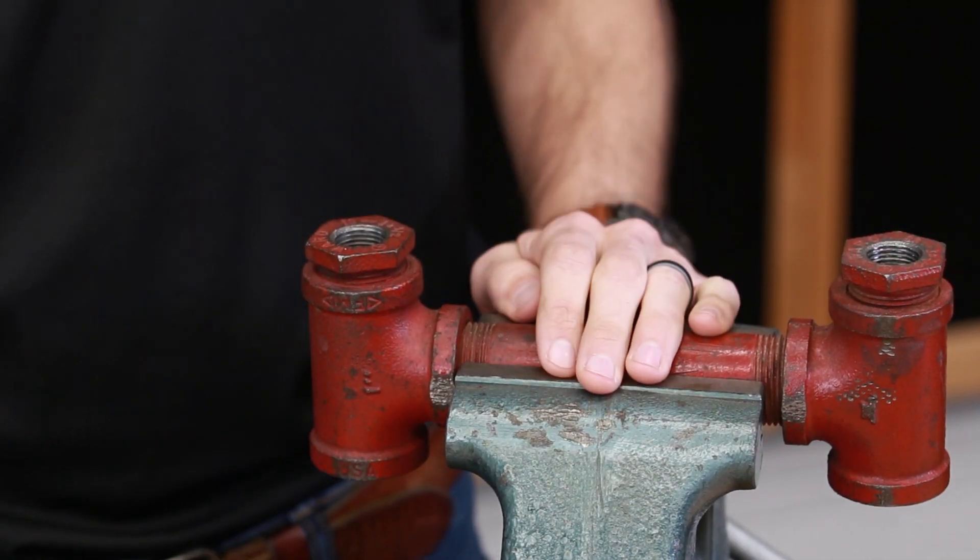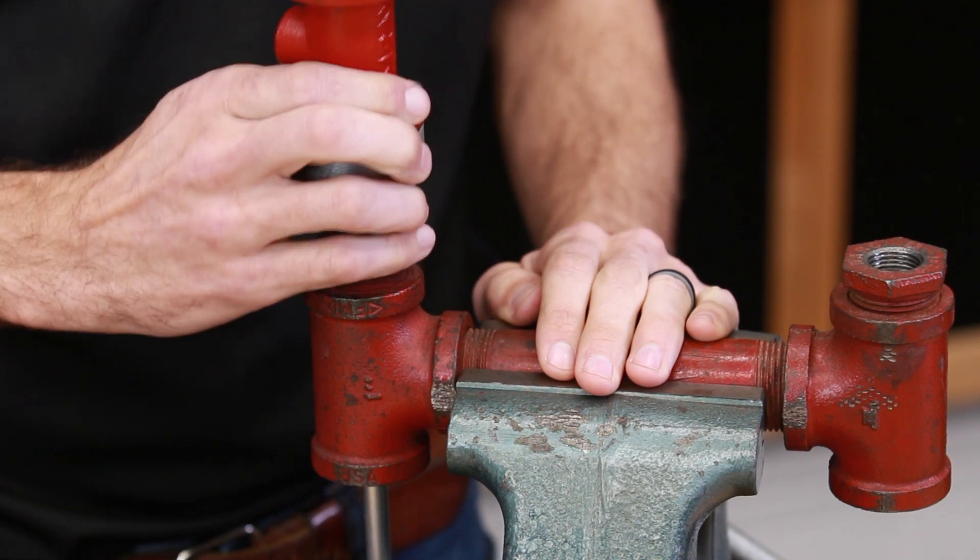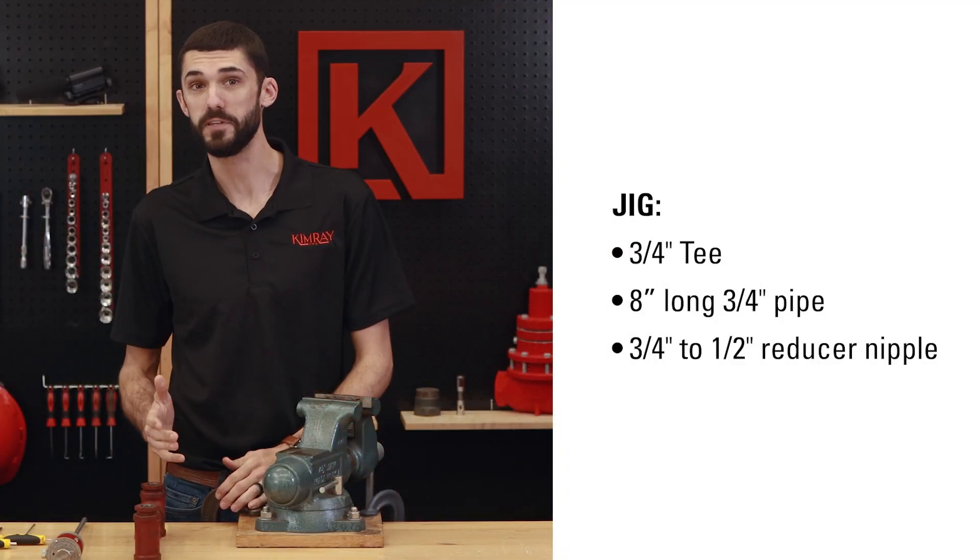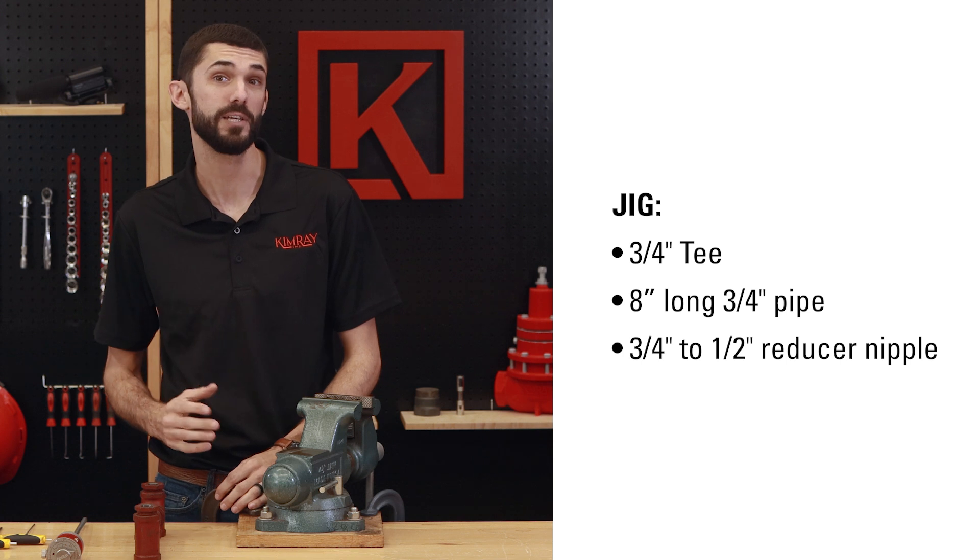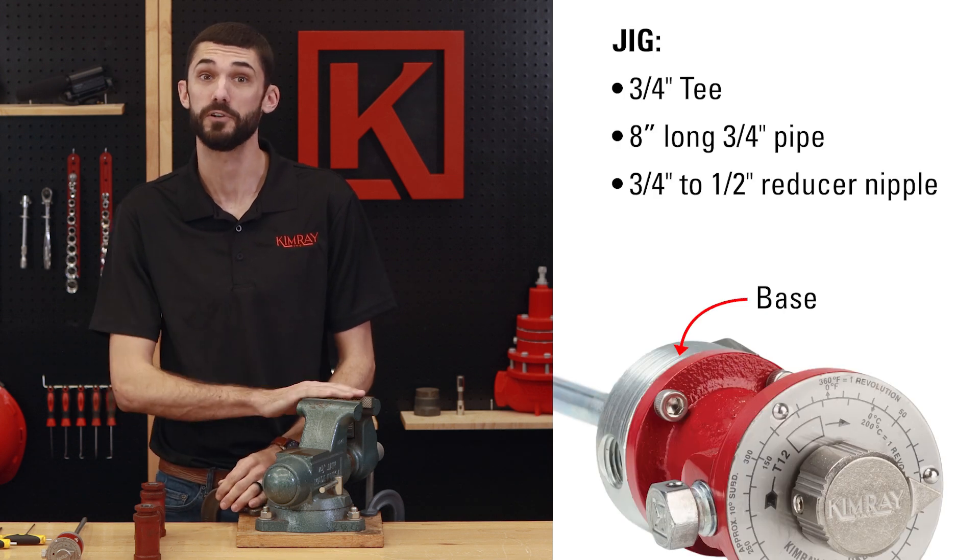We'll be using a jig to secure the T12 in place without risking damage to the unit. If you don't have these supplies or won't be able to make a jig, carefully clamp the base of the T12 into your vise.